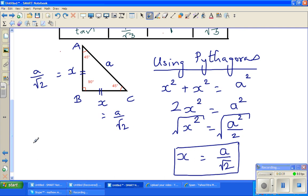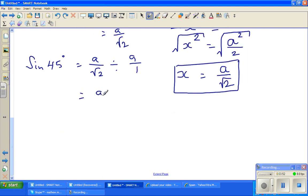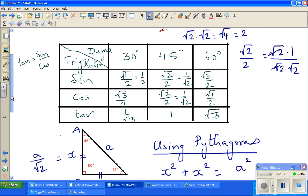So now sine 45. Sine 45 is opposite over hypotenuse. So this is a over root 2 divided by a. That becomes a over root 2 times 1 over a. The a's cancel. So sine 45 is 1 over root 2, which is the same as root 2 over 2.